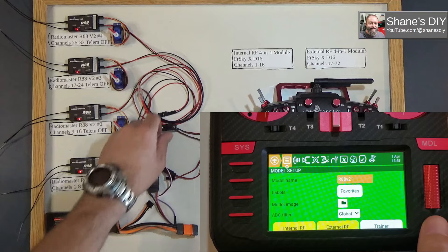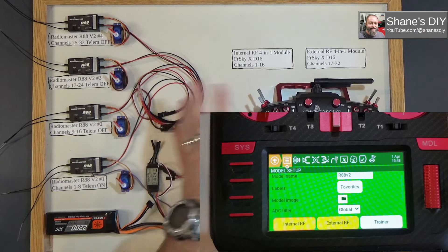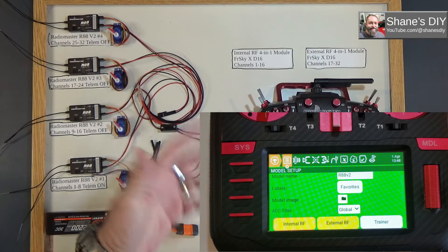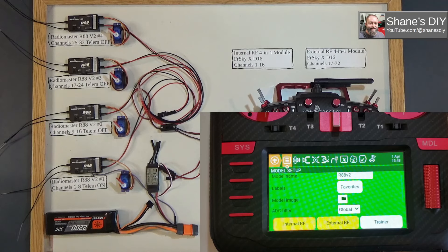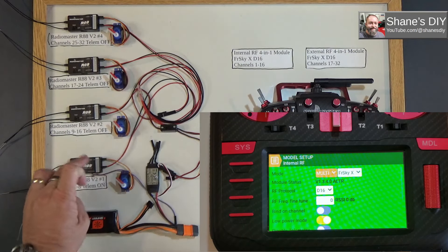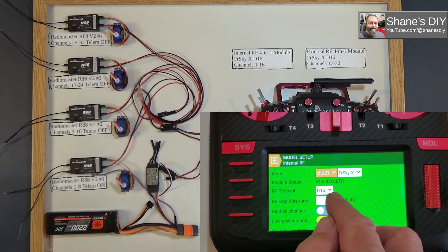Let's say these were not all connected up right now. I'm going to turn it off. I'm going to go into my first—this is your, you set up one model that will run all these. I don't know what you're going to do with 32 channels, but this is just a proof of concept so you can see how you actually do it. Set up a model, go to your internal RF first. We're going to set up the first two receivers first.